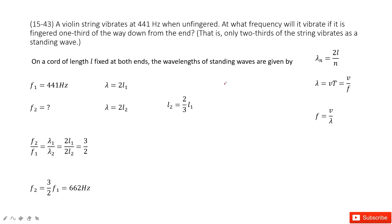For this part, we can see for the violin string, 1 quarter of length L is fixed at both sides. And the wavelength for standing wave is given by this function, 2L divided by n. n is how much the standing wave in the string. In this case, we consider it's just 1.